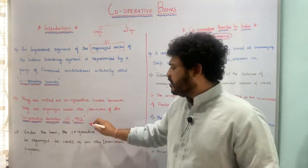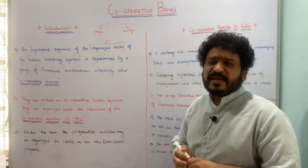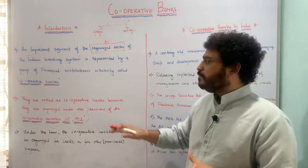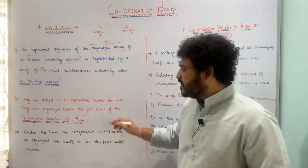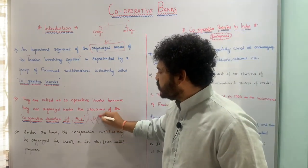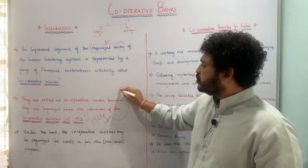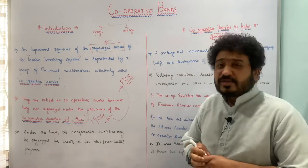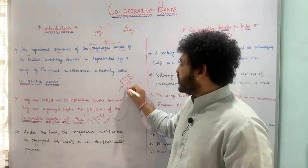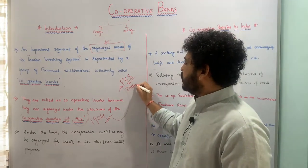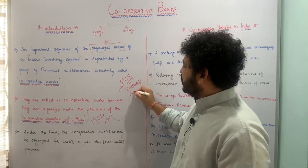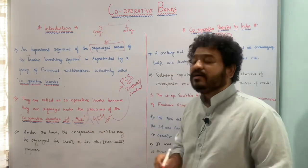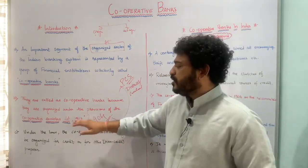They are called cooperative banks because they are organized under the provisions of the Cooperative Societies Act of 1912. The 1912 amendment made a very drastic impact. The first act was initiated in 1904, which talked about only primary credit societies, with no mention of credit societies at the district or central level — that happened only in 1912.